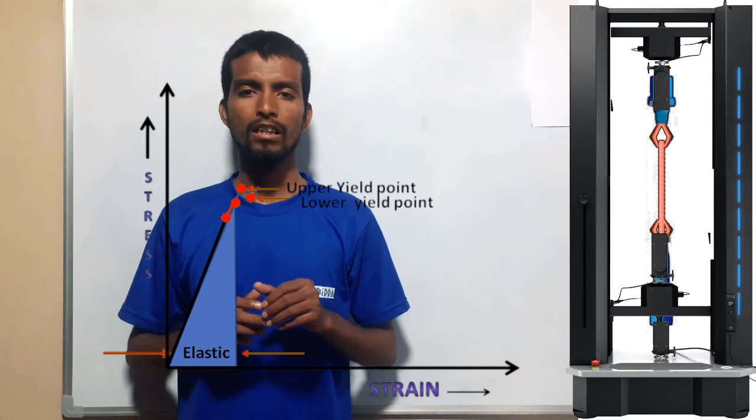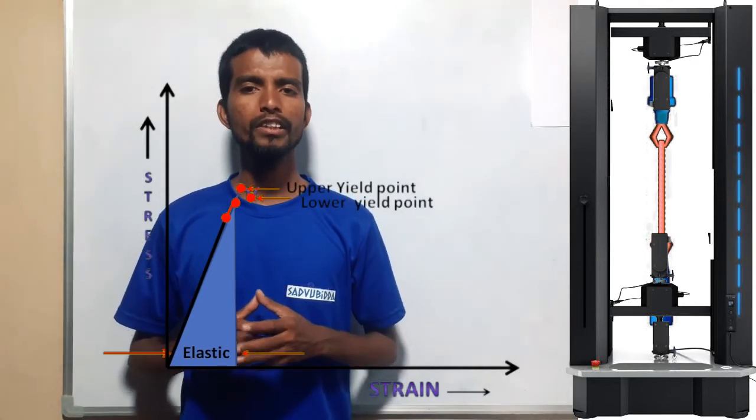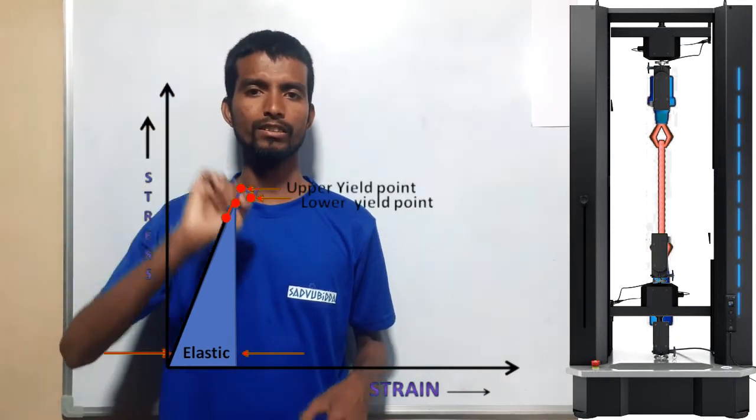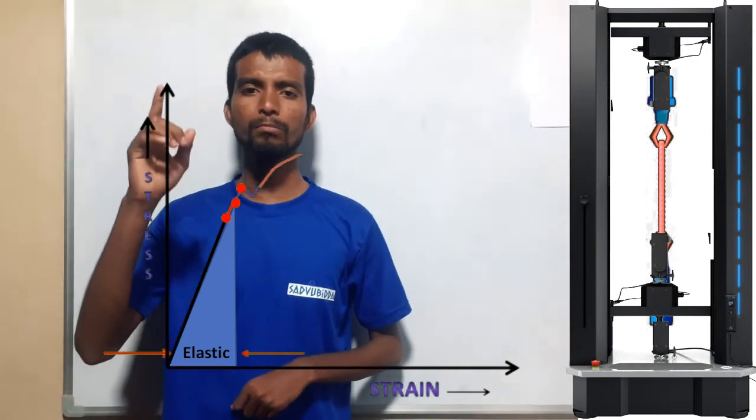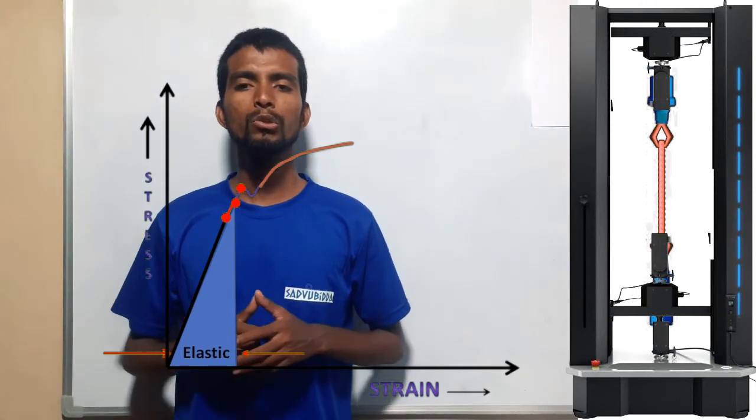After the yield point, there is a huge change in strain with less change in stress. The curve increases rapidly even with a small change in stress, then the curve reaches the highest point of stress.